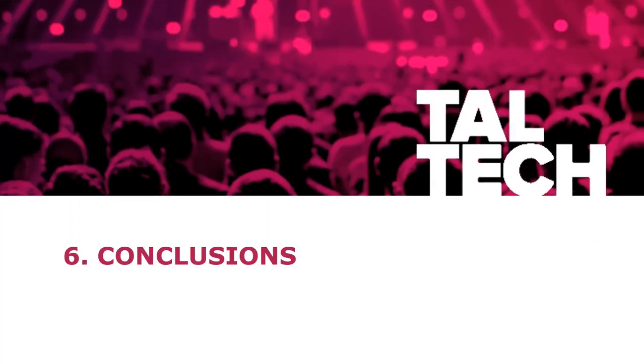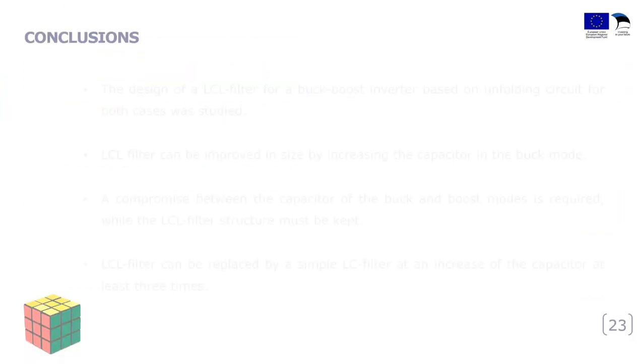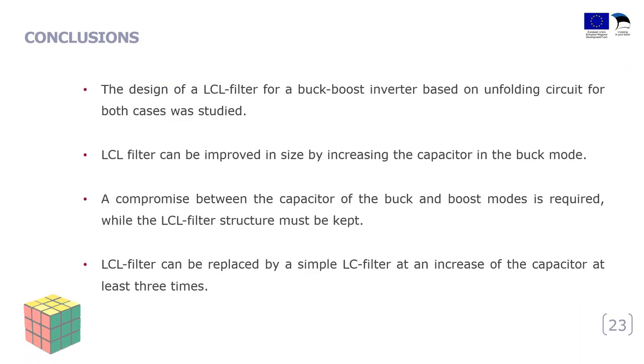Finally, let's summarize the main points from this research. The goal of this research was achieved. The design of the LCL filter for a buck-boost inverter based on unfolding circuit for both cases was studied. The size of LCL filter depends on the values of the capacitor. We need to find the compromise between buck and boost mode for selecting passive elements. If we increase the capacitor significantly, the LCL filter can be replaced just as a simple LC filter. But on the other hand, it can lead to some phase shift of the output grid.